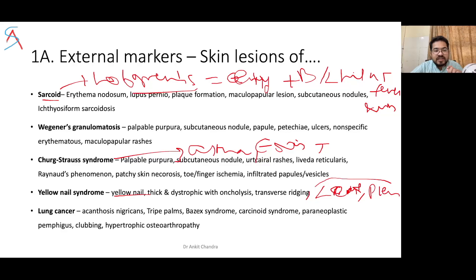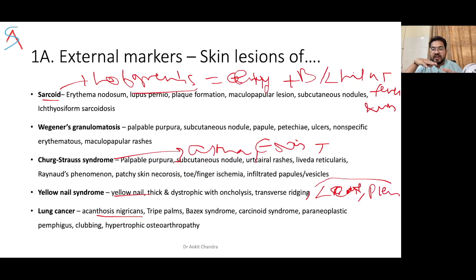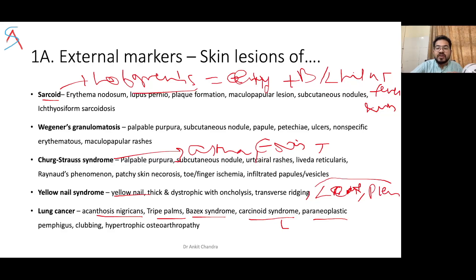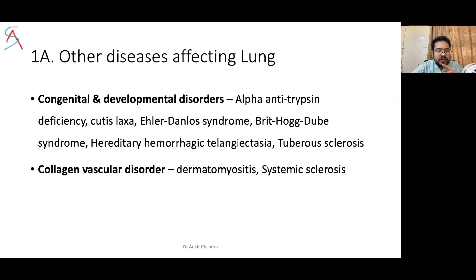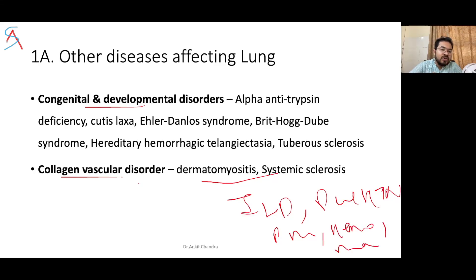Lung cancer may show acanthosis nigricans — brown and black markings in the neck or armpit — tripe palms (thickening of the palm), Bazex syndrome with acrokeratosis paraneoplastica, carcinoid syndrome with flushing, and paraneoplastic pemphigus with oral erosions and polymorphous cutaneous lesions. Collagen vascular disorders such as dermatomyositis or systemic sclerosis may affect the respiratory system through interstitial lung disease, pulmonary hypertension, pneumonia, hemorrhage, or malignancy.